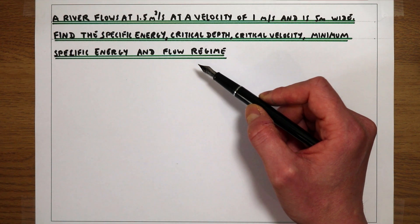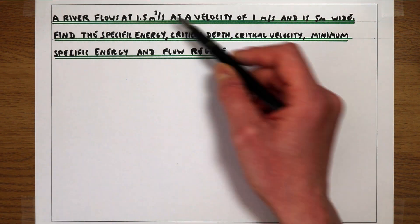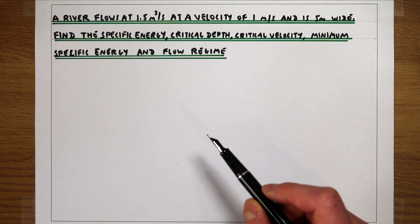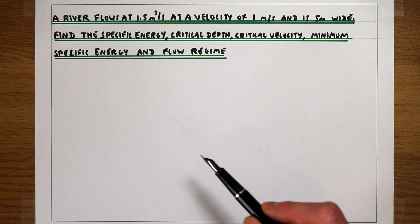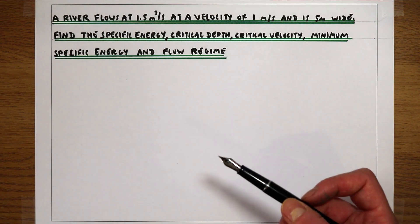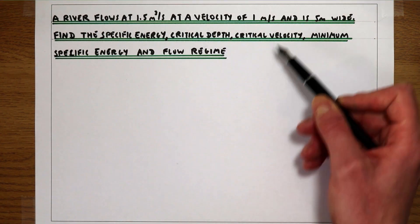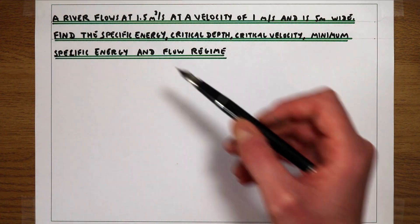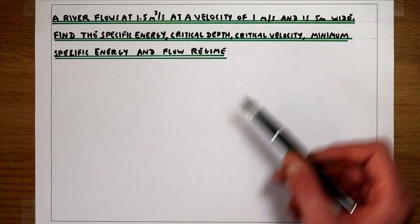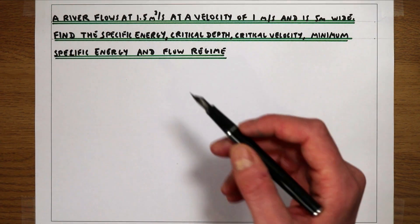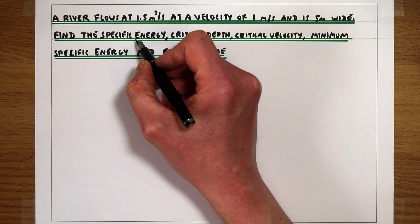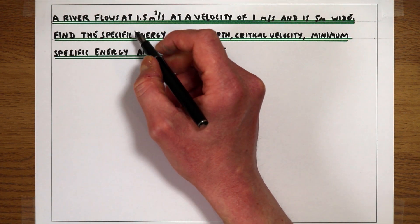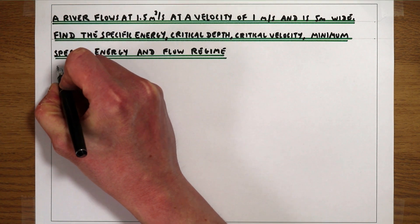In this video we're not going to go too much into the background theory of these terms — we'll do that in some other videos. What we are going to do is use some fairly generic off-the-shelf equations, the type of equations that you get in any good hydraulics textbook, to work out these terms. So the first question is: what is the specific energy — the energy in the flow relative to the channel bed?